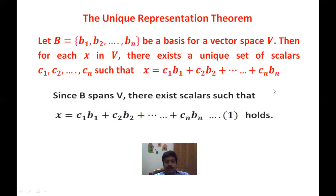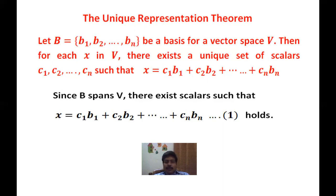Since B spans V, there exist scalars such that X = C1·B1 + C2·B2 + ... + Cn·Bn — call this equation 1. Since V is a basis, it is linearly independent and can span the entire set V. Therefore, every vector X in V is a linear combination of B1, B2, ..., Bn, and we can find scalars C1, C2, ..., Cn satisfying equation 1.